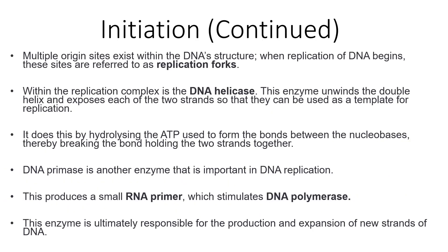You must be aware that there are multiple origin sites within the DNA structure. These sites, when DNA replication begins, are known as replication forks. DNA helicase unwinds the double helix and these are used as templates for replication. This is done by hydrolysing the adenosine triphosphate used to form the bonds between nucleotide bases, which thereby breaks the bond holding two strands together. Another important enzyme used is called DNA primase, which produces a small ribonucleic acid primer, which stimulates DNA polymerase. This enzyme is ultimately responsible for the production and expansion of new strands of DNA.